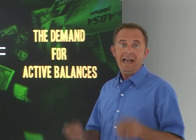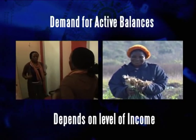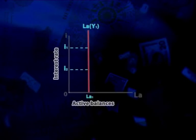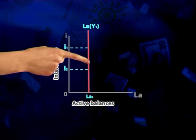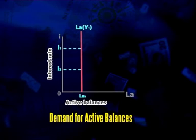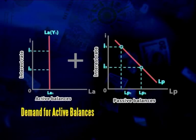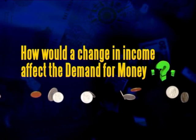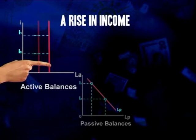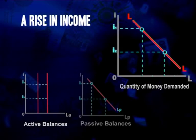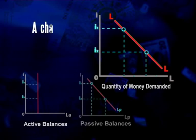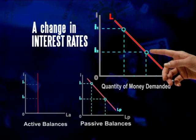But what about the demand for active balances? Well, remember we said that the demand for active balances depends on our level of income — it's not determined by the interest rate. So if we want to show it on the same graph for comparison, it's a vertical line. No matter what the interest rate is, the demand for active balances is unaffected. Now, if we combine these two curves — the demand for active and passive balances — we get the total demand for money curve, which shows us the total amount of money demanded at any interest rate. An increase in income will cause a rise in the demand for active balances, and this will be reflected by a rightward shift of the total demand for money curve. At each interest rate, more money is now demanded than before. A movement along the demand curve for money can only be caused by a change in the interest rate, affecting how much passive money is held.